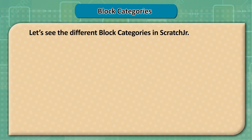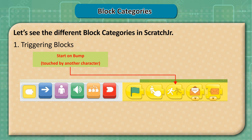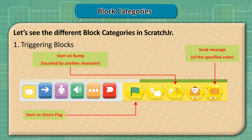Block categories. Let's see the different block categories in ScratchJunior. Triggering blocks include: Start on bump (touched by another character), Send message of the specified color, Start on green flag, Start on tap, and Start on message of the specified color.